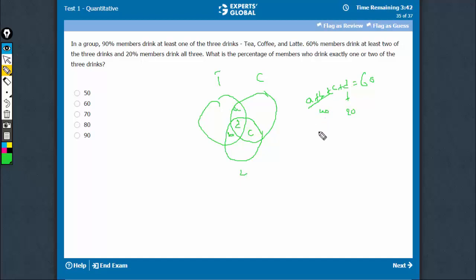What is the percentage of members who drink exactly one or two of the three drinks? 90% drink at least one, so that means 10% lies here. The question is, what is the percentage of members who drink exactly one or two?